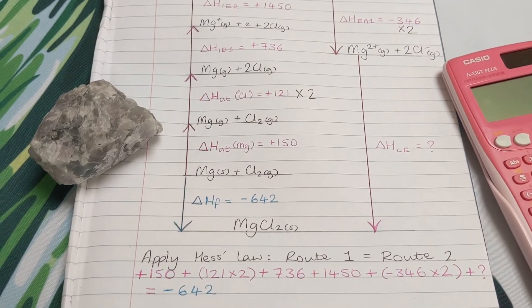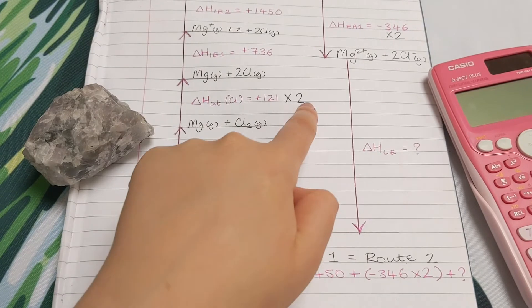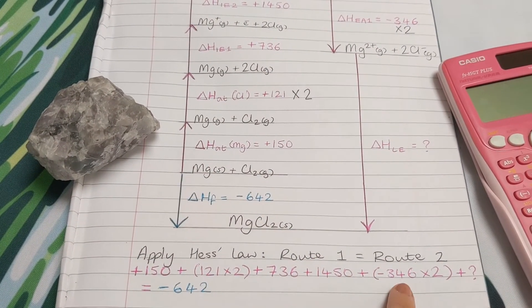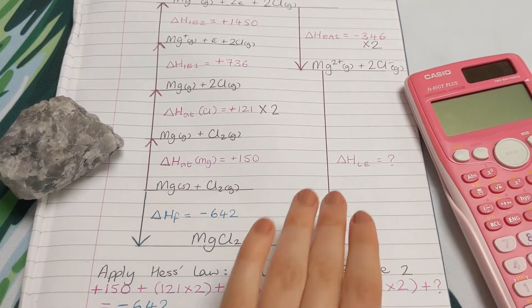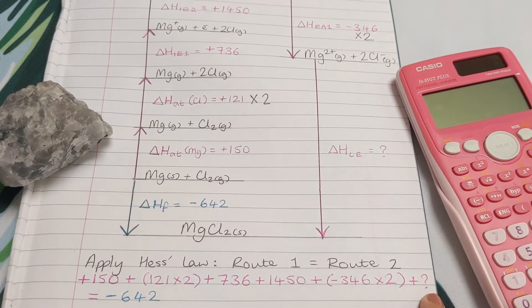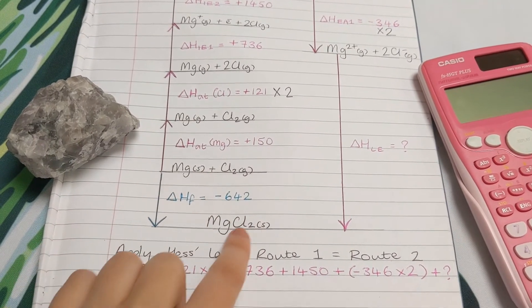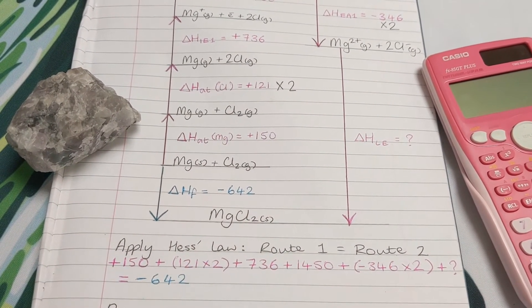So we collect all the terms involved in route one. Don't forget to times these chlorine ones by two, so I've done that here. This lattice enthalpy that we're trying to work out is involved in route one, so we'll add that in as well. I've represented that by a question mark. And we write it equal to any term involved in route two, so we've got this one minus 642.